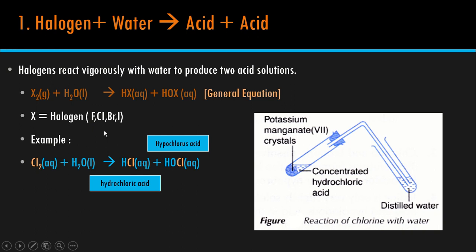So here, kita ambil Cl2. Cl2 plus water H2O to produce the first acid HX — H and X ganti dengan Cl, jadi HCl, iaitu hydrochloric acid. The second product is HOX — HO, tulis macam biasa, X ganti dengan Cl, jadi HOCl, nama dia hypochlorous acid. Inilah dua acid yang terhasil. You must balance the equation.